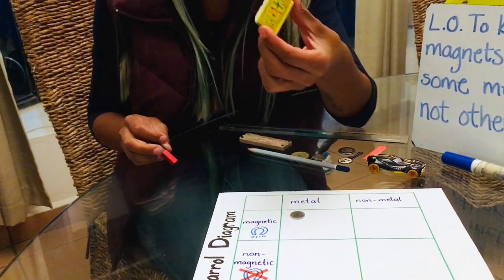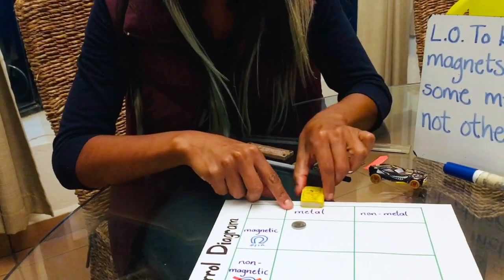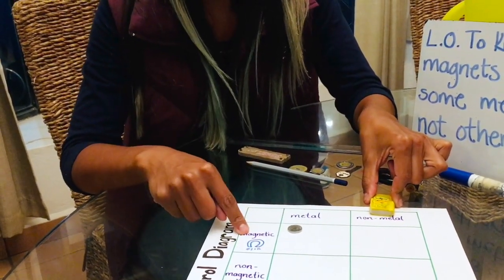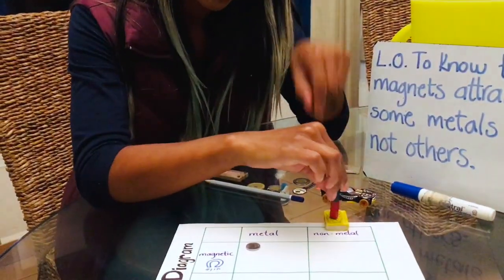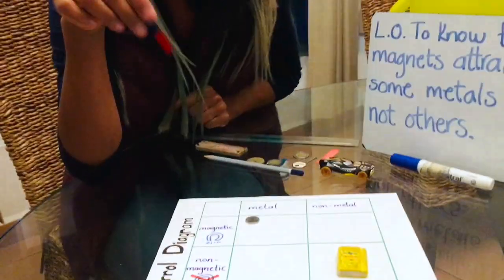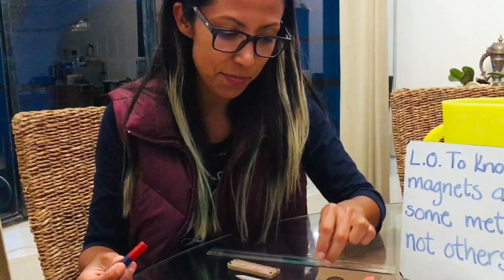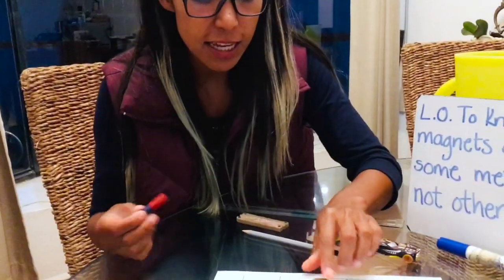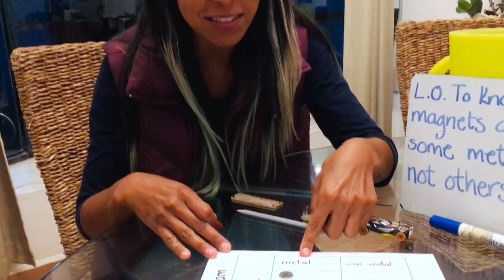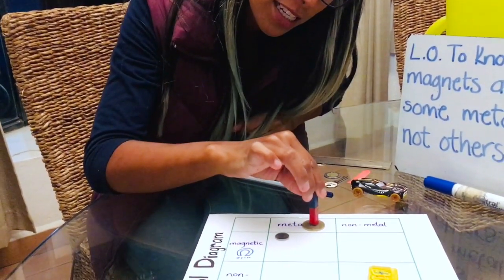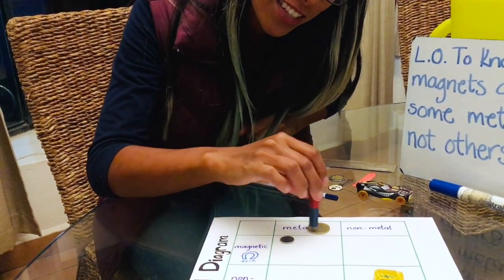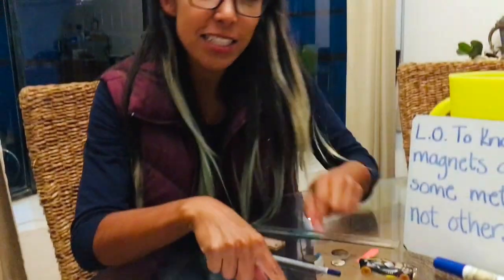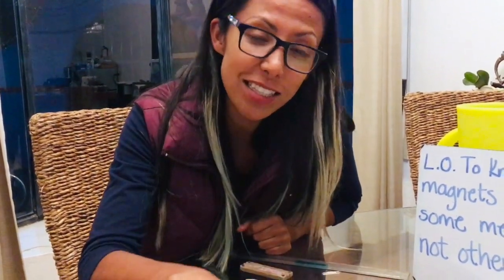Now I'm going to take my rubber — this is non-metal. I'll find out if it's magnetic or non-magnetic with my magnet. Non-magnetic. Next item: a 10 pesos coin. It is metal, but this is very interesting — it is a coin, a metal, but it's non-magnetic, so you're going to put it there.